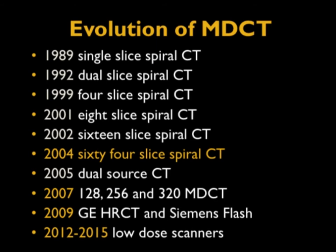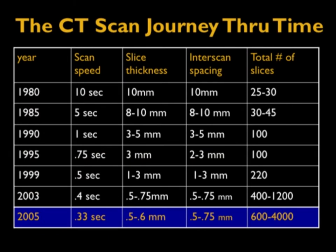In two months, RSNA is coming in November/December 2015, and you're going to see new scanners or some potential updates. Things are typically changing. But the big transition point, the real inflection point, was 2004, more than a decade ago, when 64-slice CT came along.